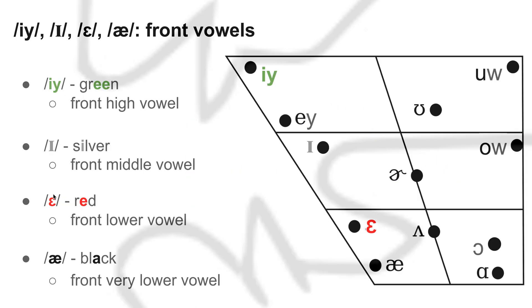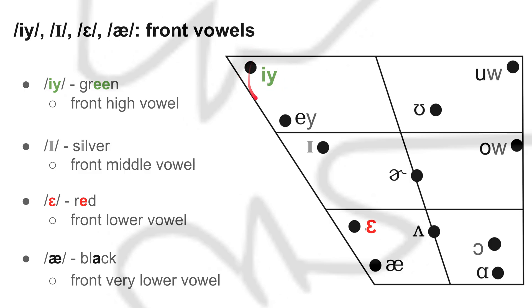I, I, E, and A are all front vowels. For example, I as in 'green' is a front high vowel. That means that when I say E, my tongue moves to the front and to the high — to the top of my mouth, to the front of my mouth and the top of my mouth.